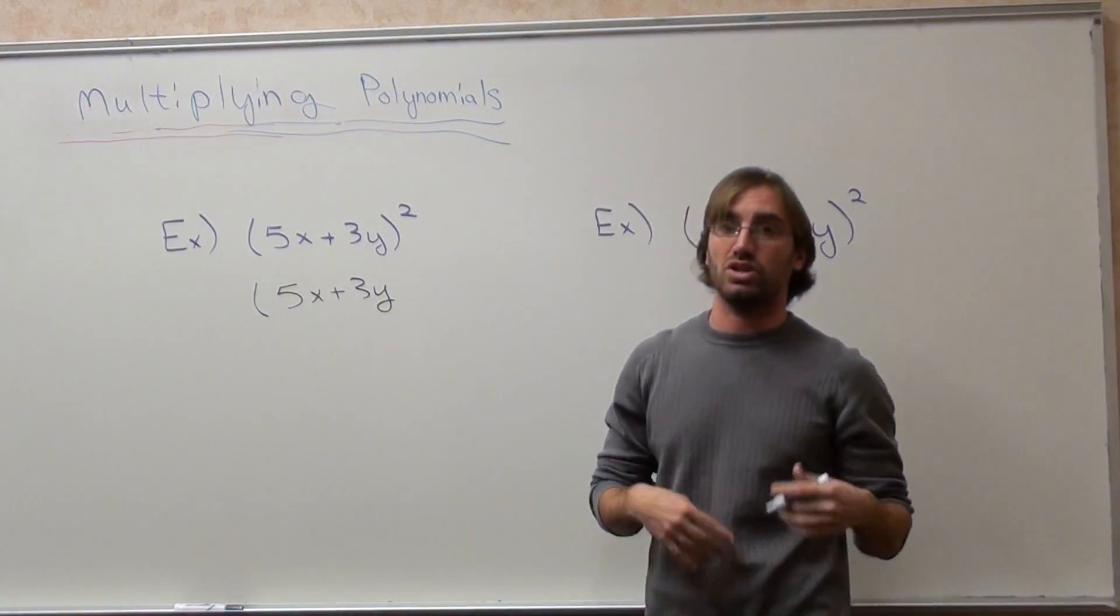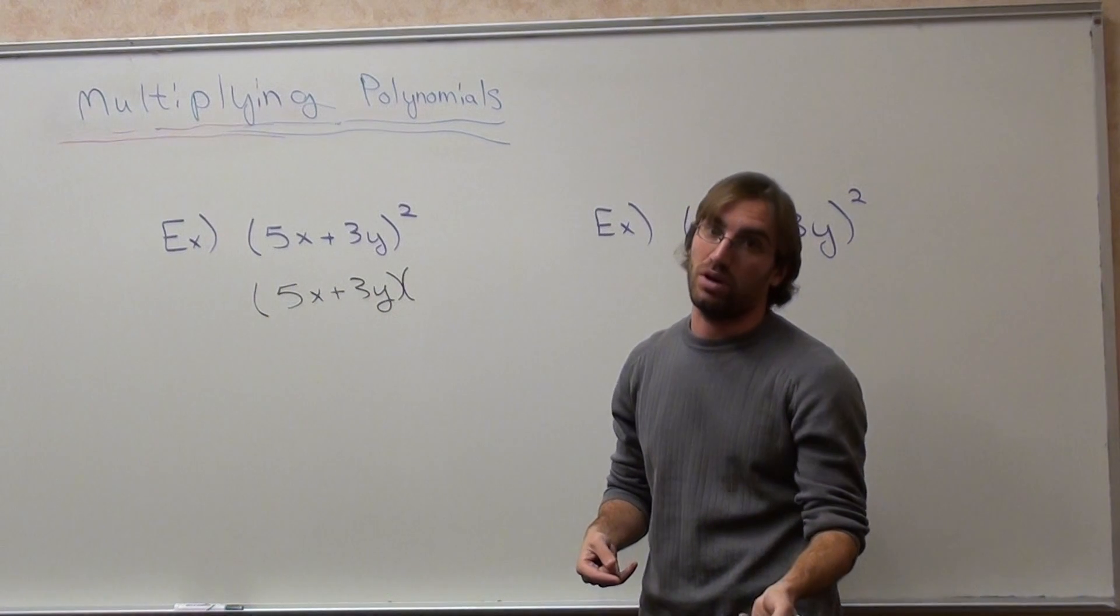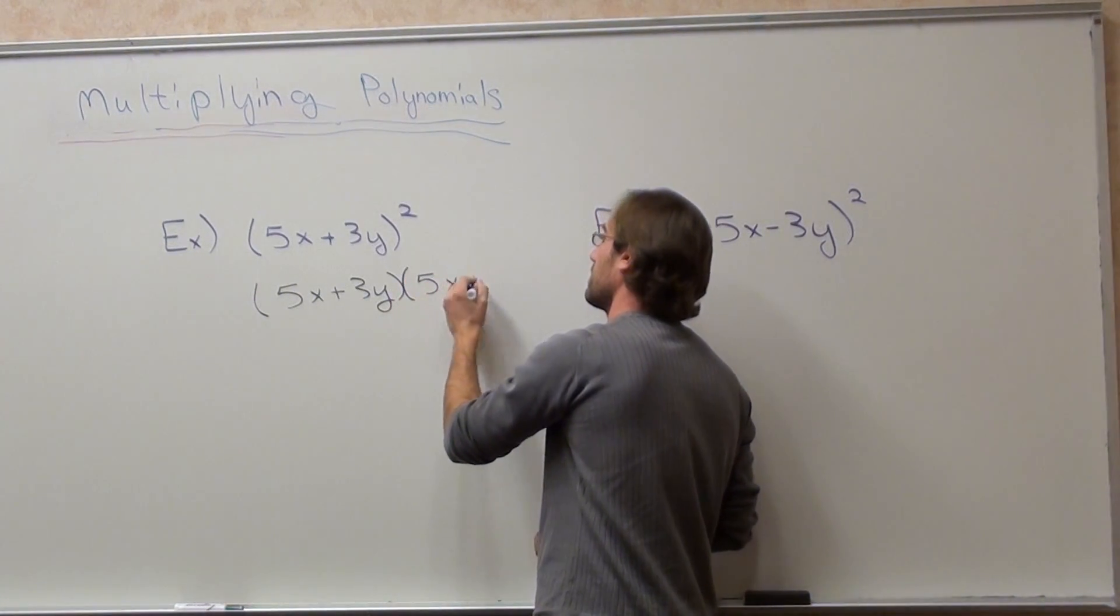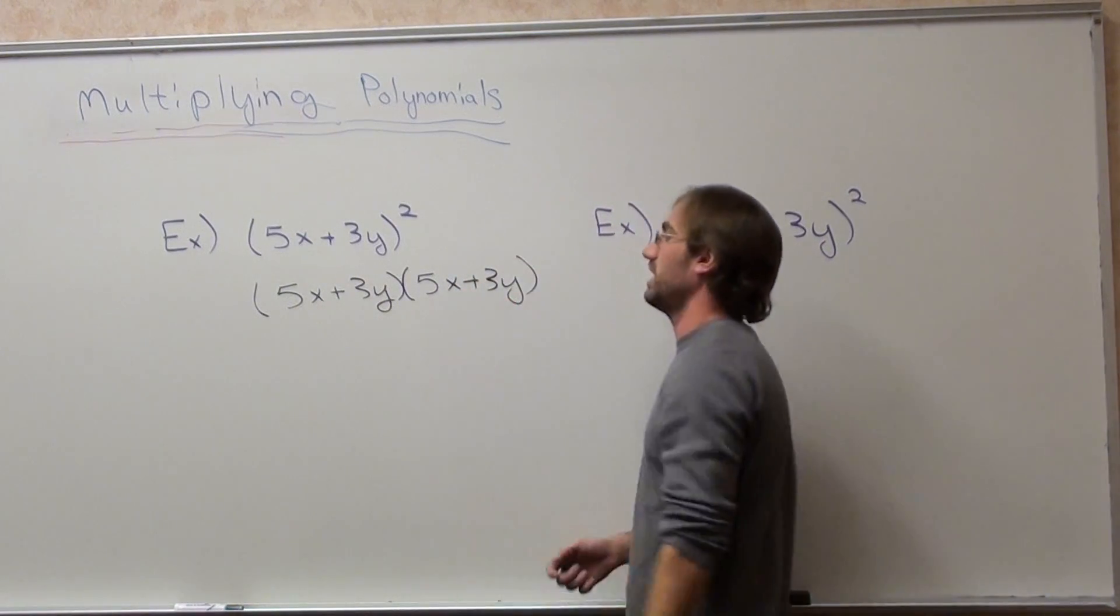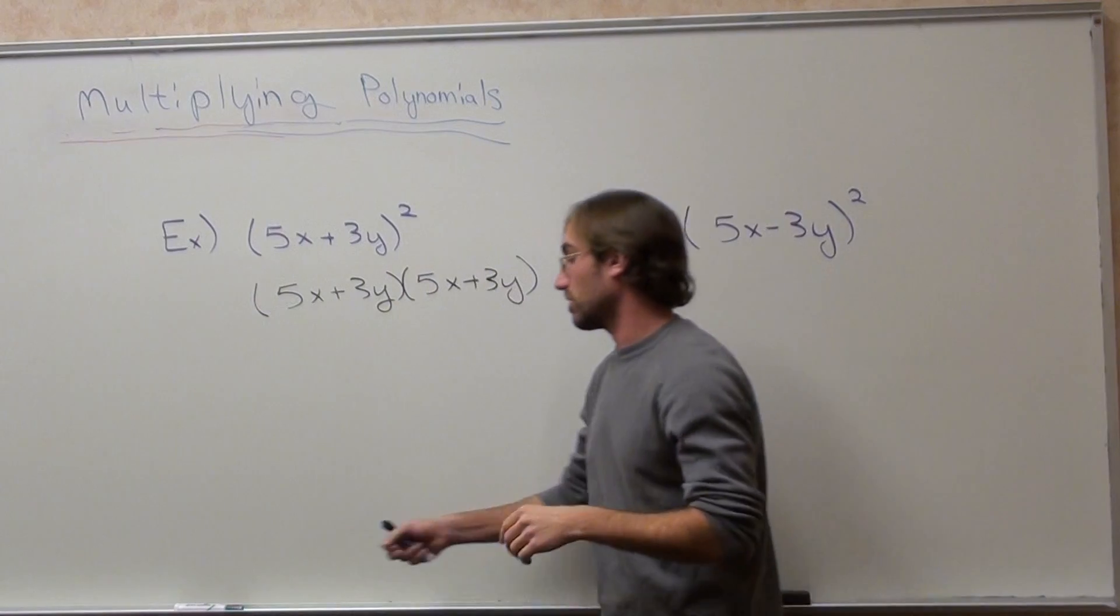And that's very simply because if you write this out the long way, I don't want to, then you're going to get it wrong. So write it out. Write it out twice. Now all you do is you distribute like we did in the previous lesson. So I'm going to go ahead and do that.